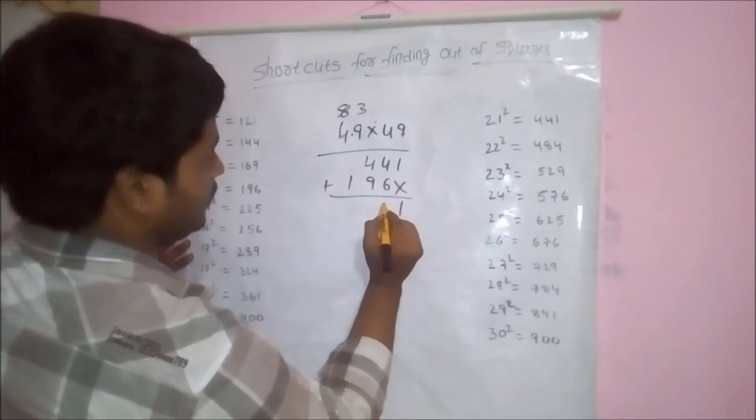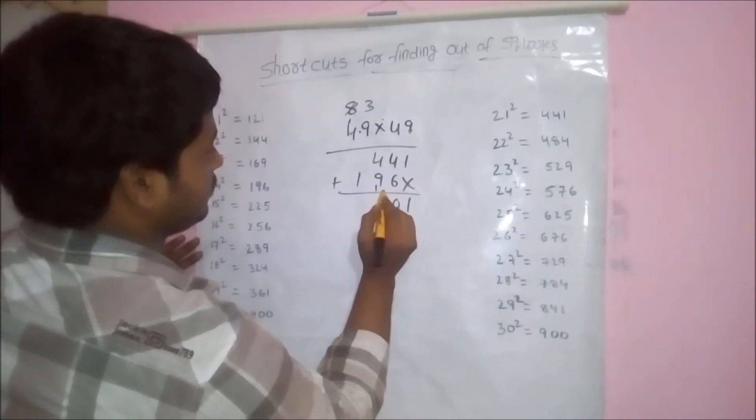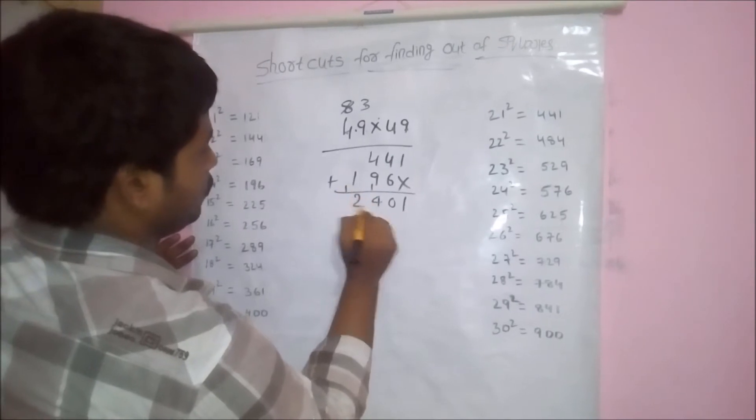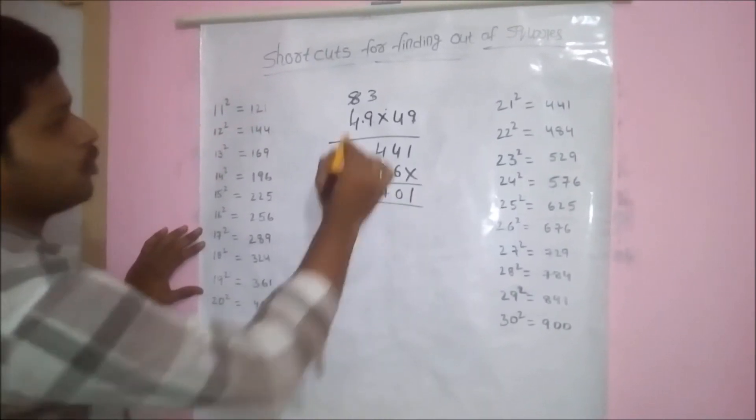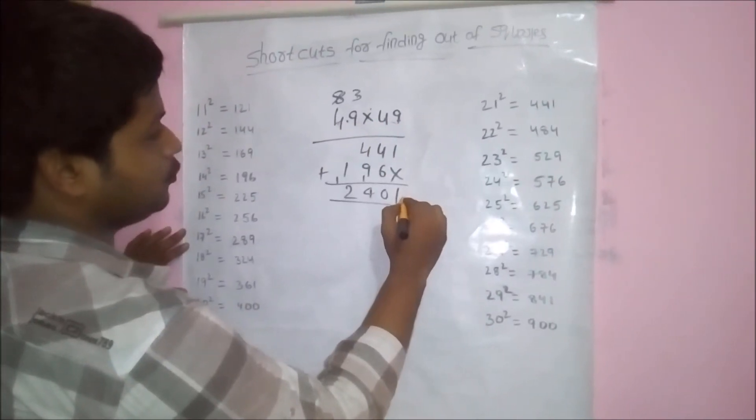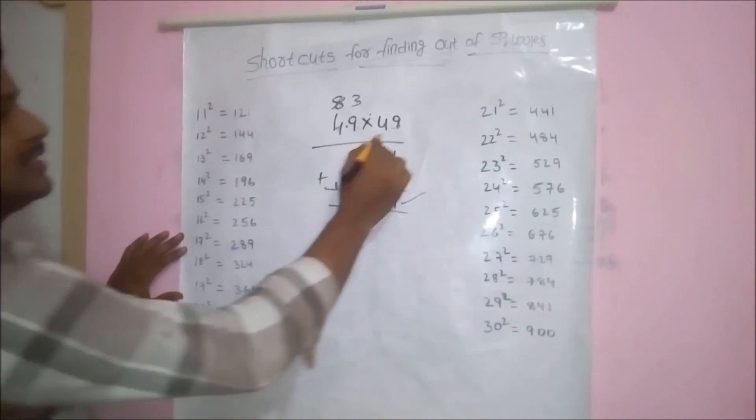Add them: 1, 10, 14, 2. That means 49 into 49 is 2401. This is the general method.